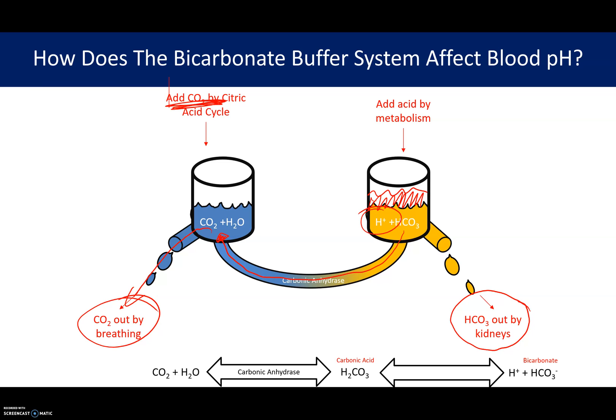Individuals that have metabolic acidosis will have increased ventilation. Individuals that have poor ventilation and can't get rid of CO2 will have acid begin to accumulate on the other side, leading to higher acidity in their blood.